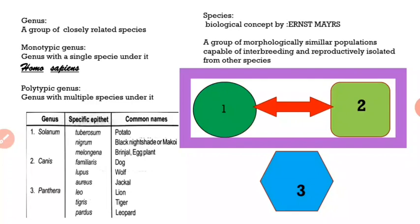Let's look at this diagram. The individuals of population 1 can successfully interbreed with the individuals of population 2. However, individuals of population 1 or population 2 cannot successfully interbreed with the individuals of population 3. So we can say that populations 1 and 2 are reproductively isolated from population 3, and therefore populations 1 and 2 belong to a single species, while population 3 is a separate species.